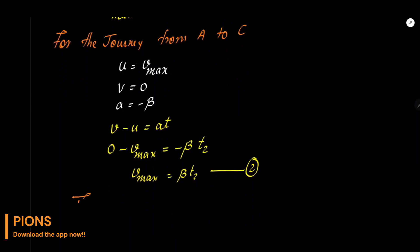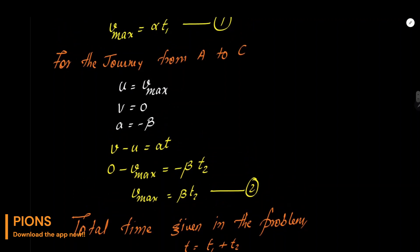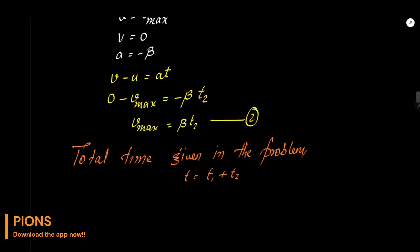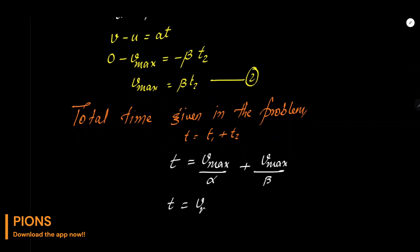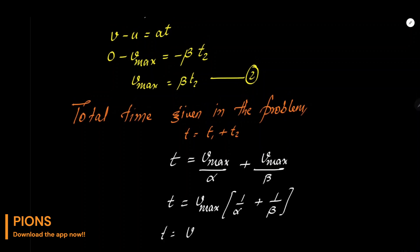Total time question में given है: T = t₁ + t₂। Equation 1 से t₁ = v_max/α और t₂ = v_max/β। Put करते हैं: T = v_max/α + v_max/β = v_max · (1/α + 1/β)। Common लेने पर: T = v_max · (α + β)/(α·β)।